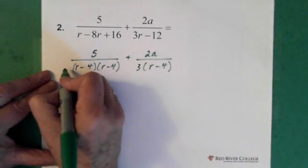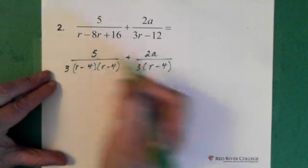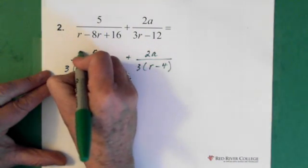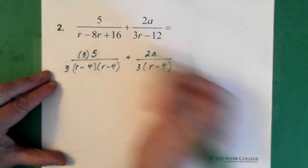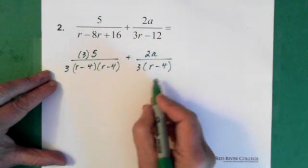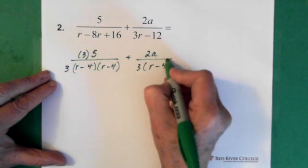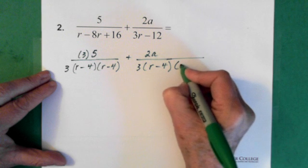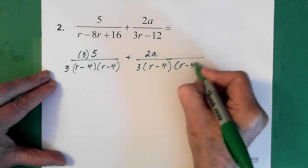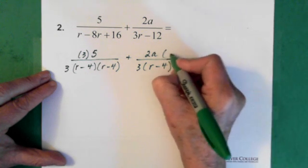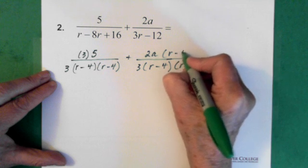So then what we can do is say, alright, well I'm going to put a 3 in here, but I also then have to put a 3 up here. And I need to multiply this denominator by (r - 4). And I need to multiply up here by (r - 4).